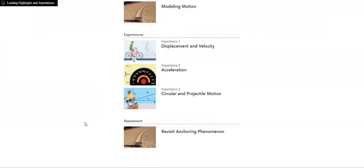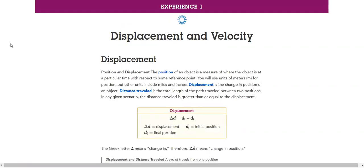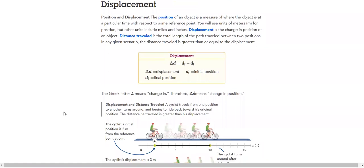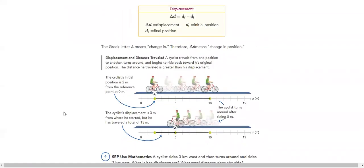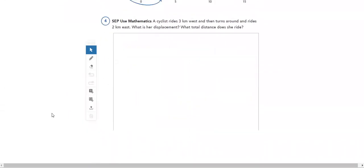For Investigation 1, we have three experiences: displacement and velocity, acceleration, circular and projectile motion. We have for displacement, what does it mean, the definition of it, and the formula used to represent it, and how is it represented. And using mathematics, applying the rule.